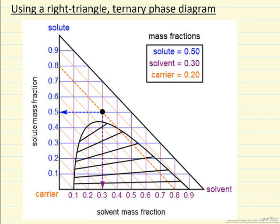I'm going to describe how we read values off of a right-triangle ternary phase diagram. We have three components. This is set up because we're interested in liquid extraction, but it applies in general.